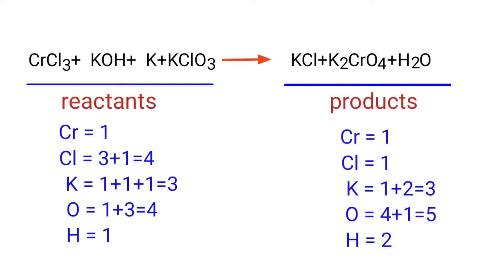This equation is not balanced. On the reactants side, there are one chromium atom, four chlorine atoms, three potassium atoms, four oxygen atoms, and one hydrogen atom. On the products side, there are one chromium atom, one chlorine atom, three potassium atoms, five oxygen atoms, and two hydrogen atoms.